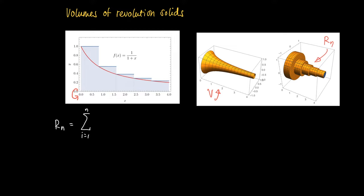This Rn is now the sum of n such cylinders. Each cylinder has height Δx, and the cylinder is given by the area function A(x*), which is given by the radius of the cylinder.